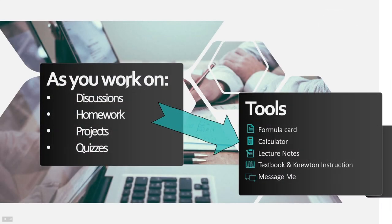And so that is Chapter 12, the last chapter. We are almost done — yay! This is such a hard course and you have worked so hard. I'm so excited that you have given so much to the course. I wish you well as you go through the discussions, homework, projects, and quizzes. Use your formula card — especially those calculator shortcuts — and your calculator, which will save you an enormous amount of time in the linear regression equations and in computing the R and R-squared values. Use your lecture notes, textbook, and Newton instructions. And if all of these fail you, please message me. Thank you and good luck.